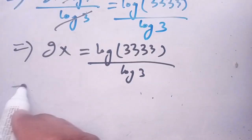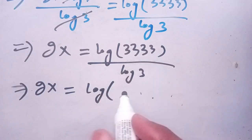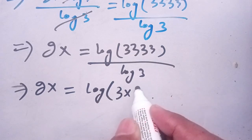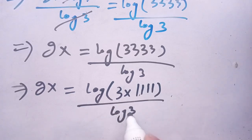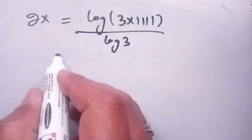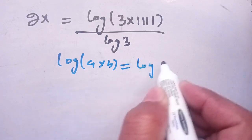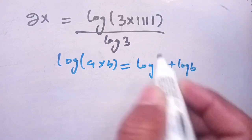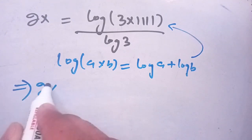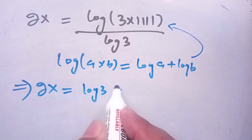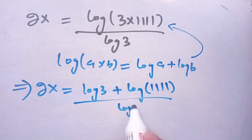Now, 3333 can be written as 3 times 1111, so 2x is equal to log of 3 times 1111 divided by log of 3. By the logarithm identity, log of a times b is equal to log of a plus log of b. Applying this, we get 2x is equal to log of 3 plus log of 1111, all divided by log of 3.